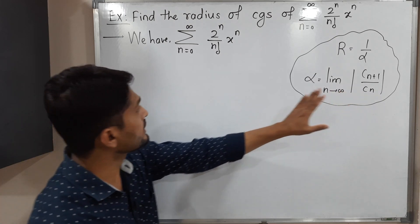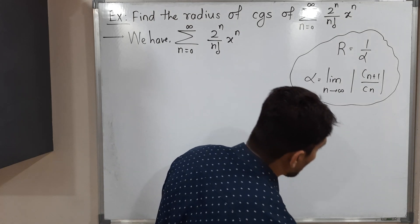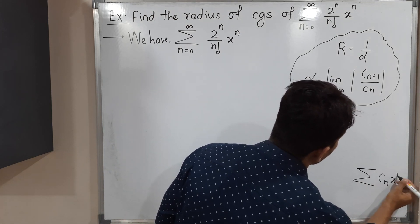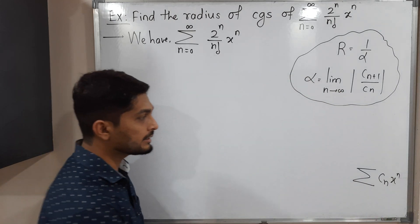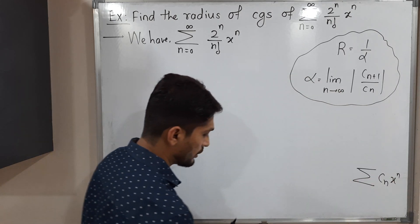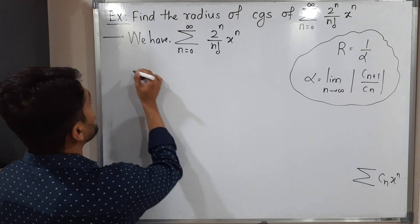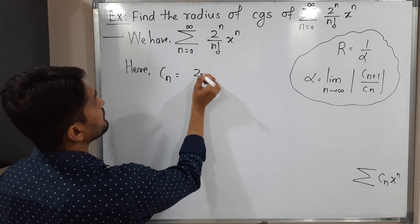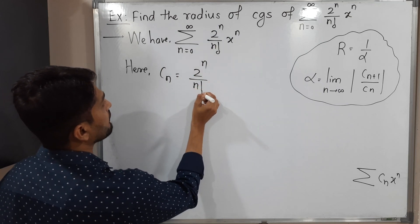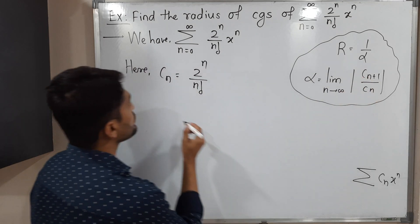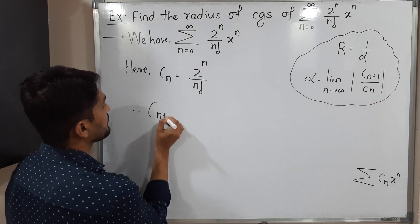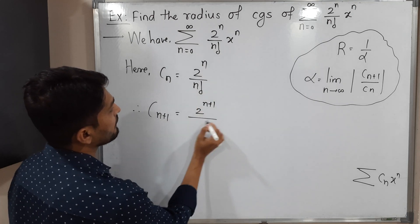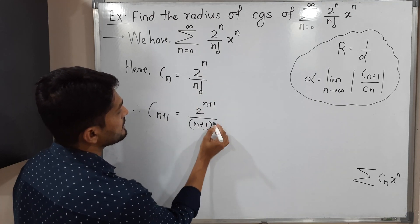Let us write cₙ. The standard form of the power series is summation cₙ x raised to n, so cₙ is the multiple of x raised to n. Here that multiple is 2 raised to n over n factorial. So cₙ = 2ⁿ / n!. We also need c_{n+1}, which can be obtained by replacing n by n+1 everywhere, giving c_{n+1} = 2^{n+1} / (n+1)!.